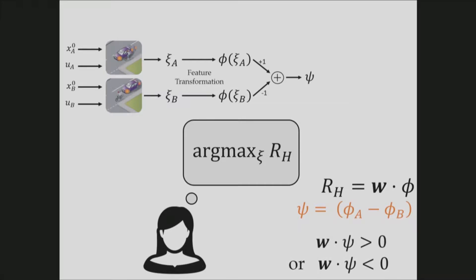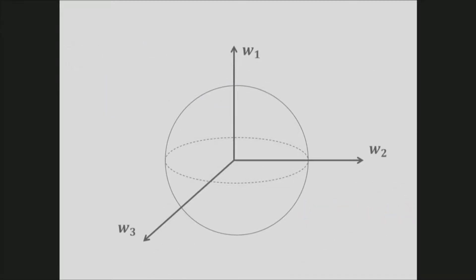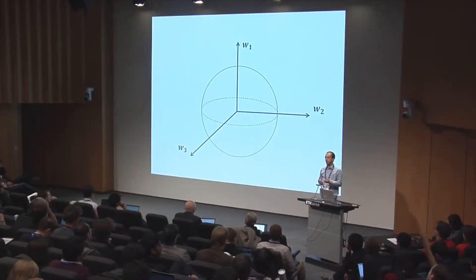And thanks to the linearity of the reward function, we can use the difference in the feature vectors to compute the difference in the reward values. And we call this difference vector ψ. So each query is really asking whether w·ψ is positive or negative. This means we can use the sign function to represent the human's response.